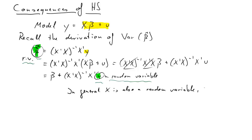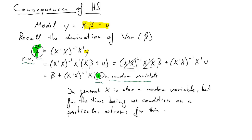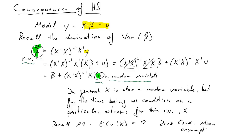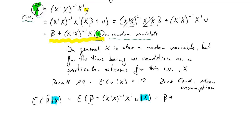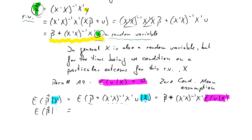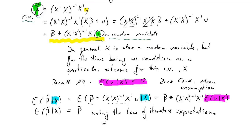We know that x's are also random variables, but for now we condition on a particular outcome for x. Invoking assumption A4 — the expected value of u conditional on x is zero, the zero conditional mean assumption — we can take conditional expectations of beta hat. Since beta is an unknown but constant, we can take it out, and the x's are conditioned on so they come out of the expectations operator. The remaining term is assumed zero by A4, therefore the expected value of beta hat conditional on x equals beta. Using the law of iterated expectations, we establish that the unconditional expectation of beta hat also equals beta.